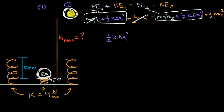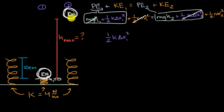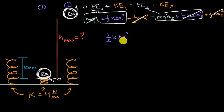On the right-hand side, the spring is no longer compressed in scenario two, so elastic PE is zero. At maximum height, the ball is stationary for an instant — it's at the moment it transitions from moving up to moving down — so velocity two is also zero. This means initial elastic potential energy equals scenario two's gravitational potential energy.